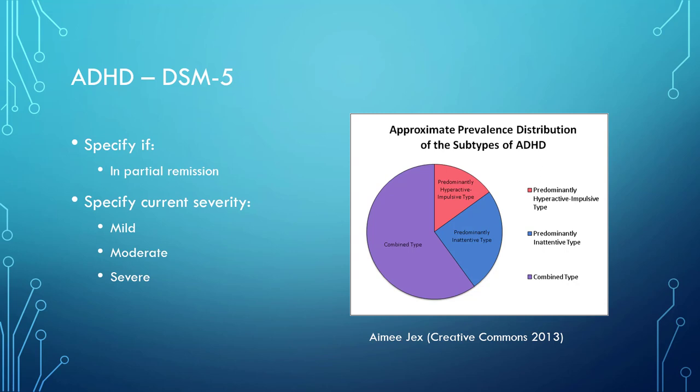When diagnosing ADHD, you must specify if the condition is in partial remission, and also specify the current severity: mild, moderate, or severe. In the pie chart, you can see the approximate prevalence distribution of the subtypes of attention deficit hyperactivity disorder. Predominantly hyperactive-impulsive type is the less common type, with the most common type being the combined type. Then we have the predominantly inattentive type, which seems to be more common in female children than in males.